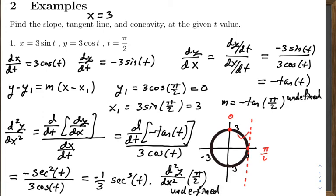So we can't talk about the concavity there. If you want to look at a different place, like t = π/6 or t = 0, then you could find the equation of the tangent line and the concavity at that point.